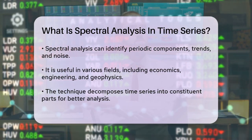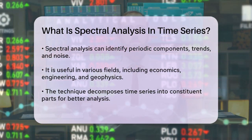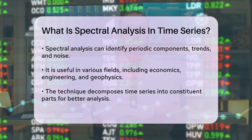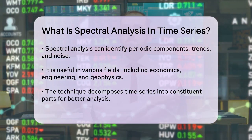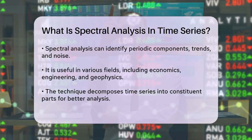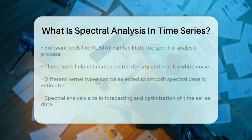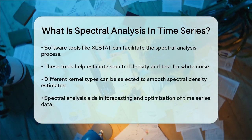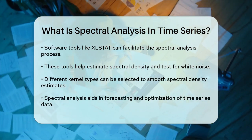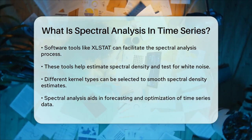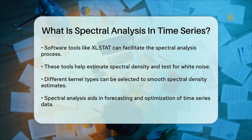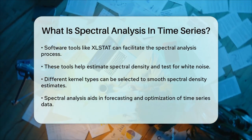To perform spectral analysis, you can use software tools like Excelstat, which integrates with Excel to make the process easier. These tools allow you to estimate the spectral density, calculate the cross-spectrum, and even test if your time series is just white noise. You can also select different kernel types to smooth your spectral density estimates and get a clearer picture of your data.